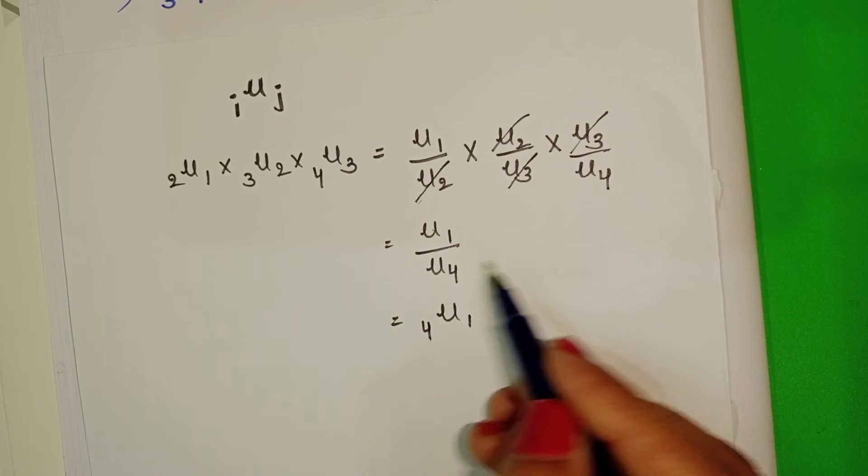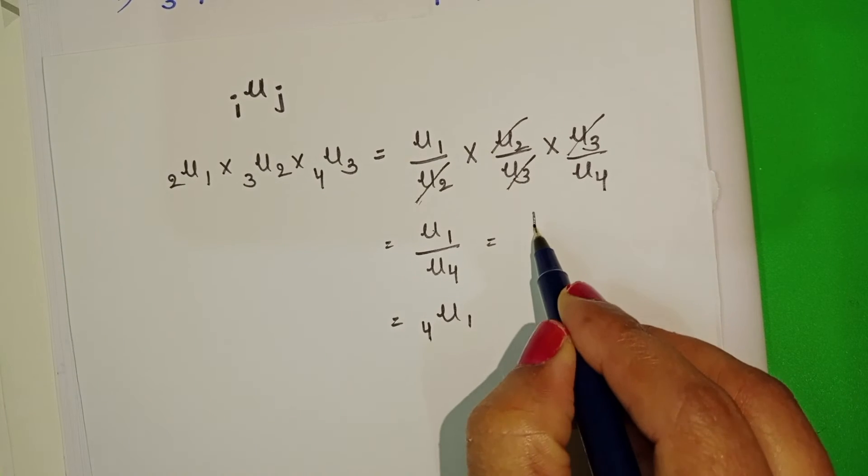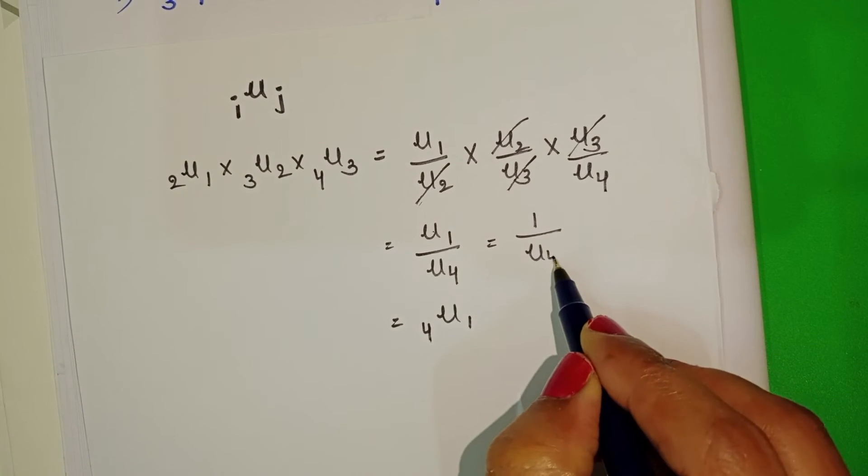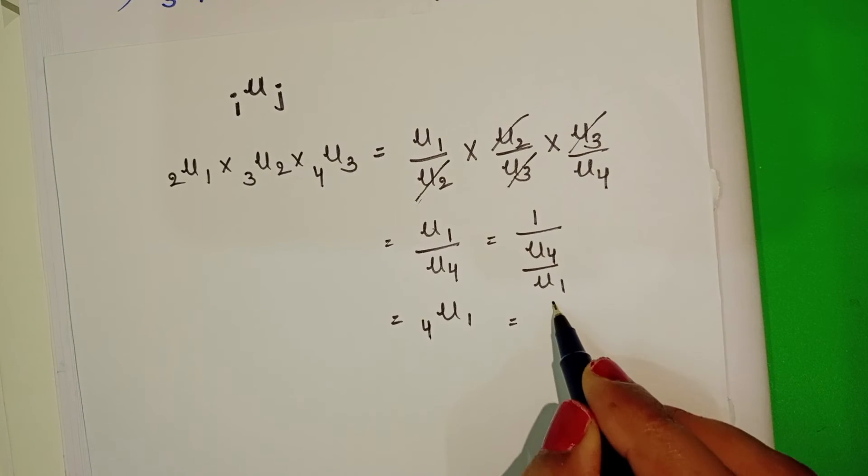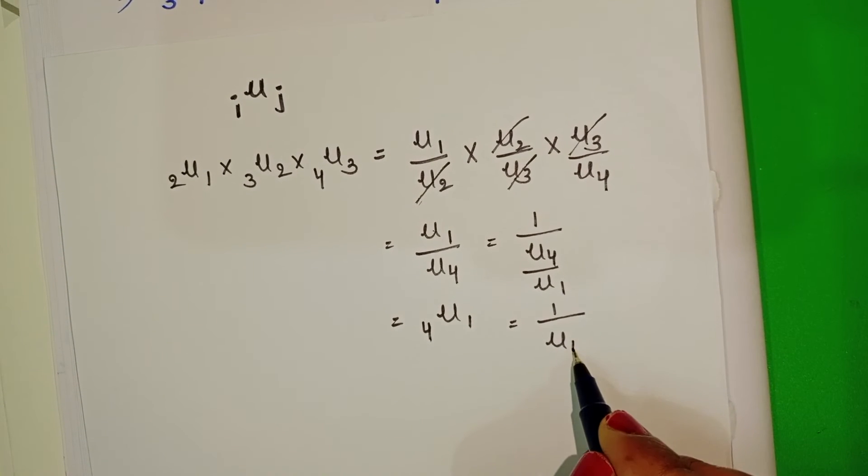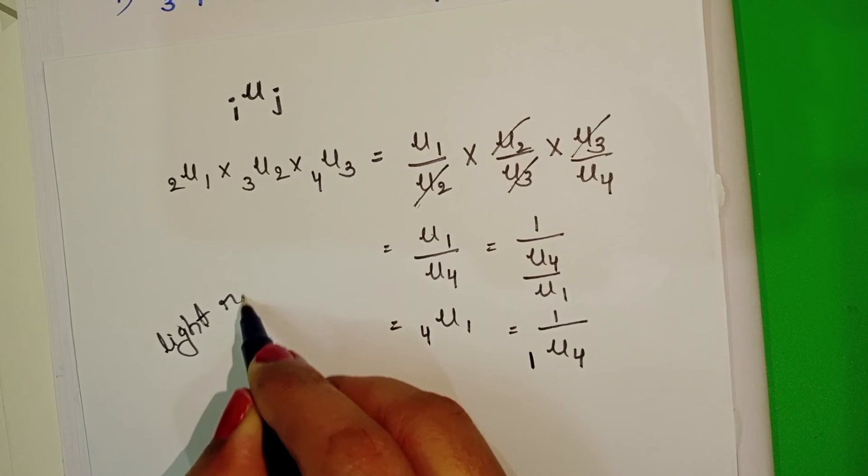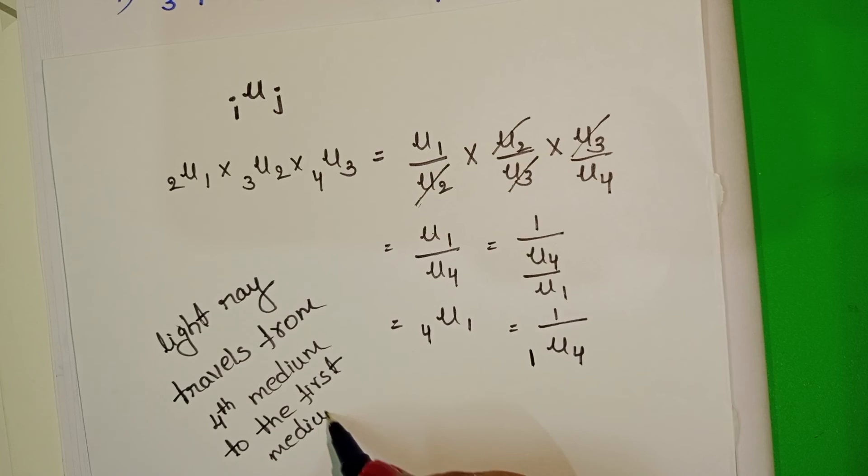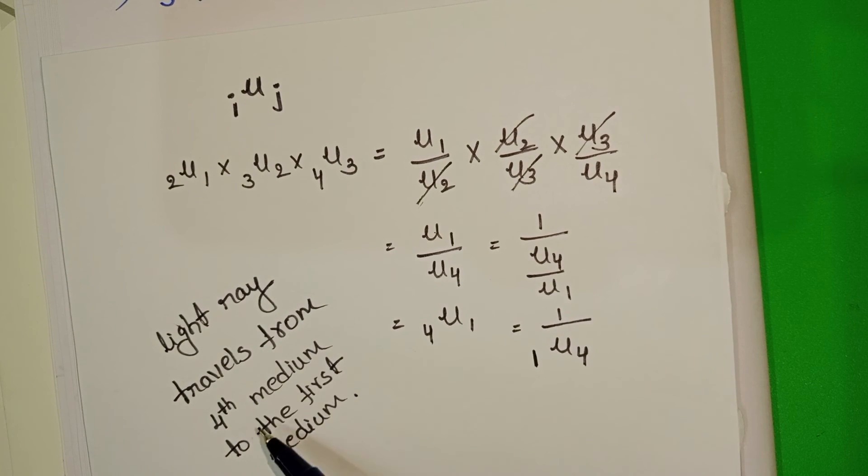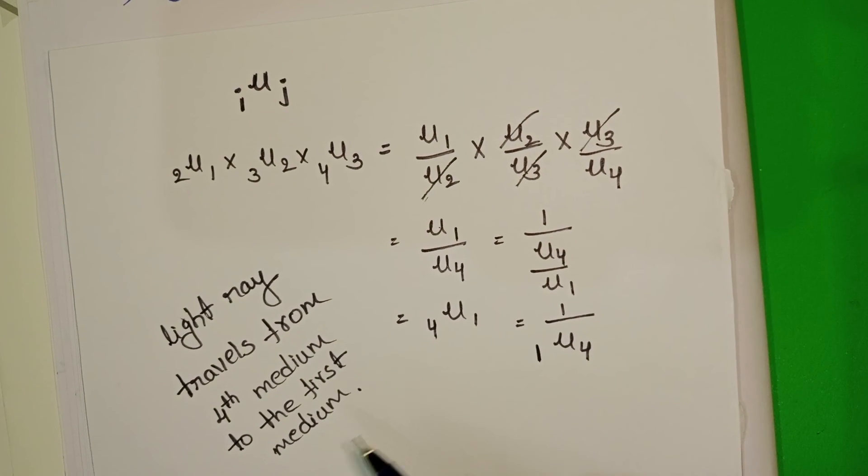Actually this is mu 1 by mu 4. Then it becomes 1 by mu 4 by mu 1, which equals 1 by mu 41. Light ray travels from fourth medium to the first medium.